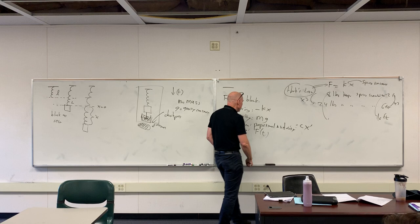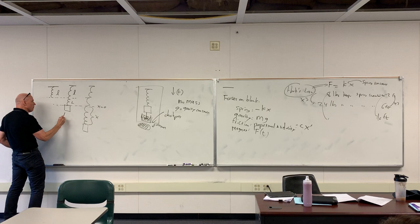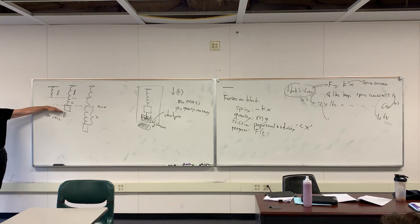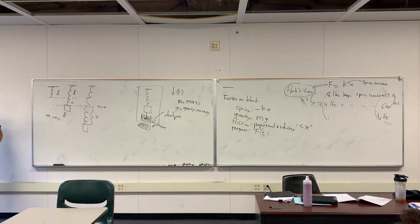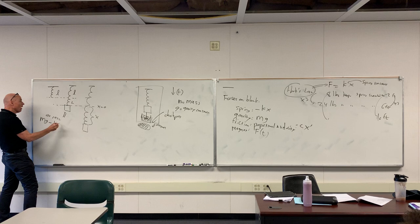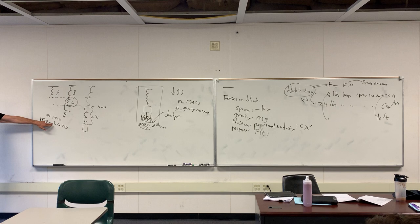Let's focus on the block at rest. When the block is here, it's not moving, there's no friction, and if we ignore the magnet for a moment, the spring force and the gravity force are in balance - the net force is zero. The gravity force is mg, and the spring force is negative k times l (the equilibrium stretch). When it's at rest, these cancel: mg minus kl equals zero. Keep that in mind - we'll need it very soon.